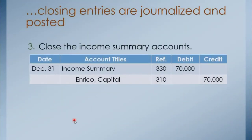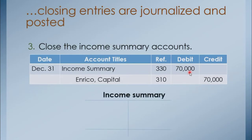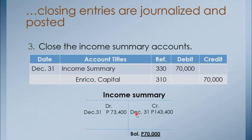After we close the revenue and expense accounts, let's close the income summary account. Just debit the income summary and credit the owner's capital account. How do we come up with the income summary balance of 70,000 pesos? Let's show this using the T-account. The income summary is credited when we close the revenues, and we debit the income summary when we close the expense accounts. So, 143,400 less 73,400 is 70,000.